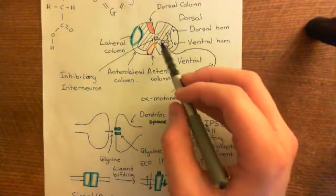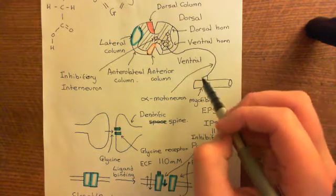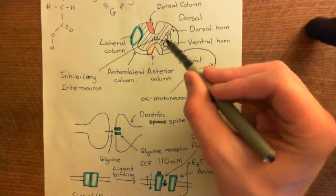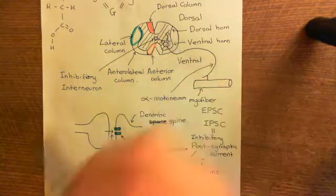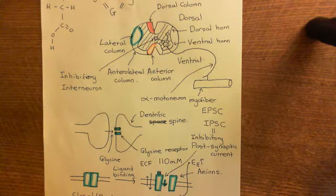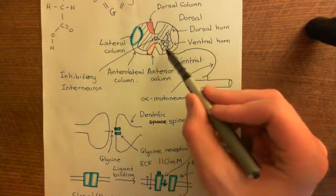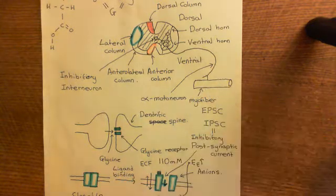These inhibitory interneurons basically make it less likely that these alpha motor neurons are actually going to fire. There will be excitatory input and inhibitory input, and the inhibitory input is trying to neutralize the excitatory input — trying to stop the alpha motor neuron from being depolarized to the point that it will fire an action potential. These inhibitory interneurons are inhibiting alpha motor neurons and stopping them from firing.